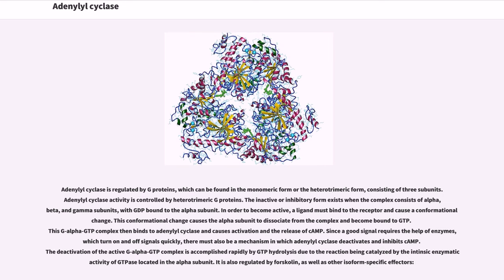Adenylyl cyclase is regulated by G-proteins, which can be found in the monomeric form or the heterotrimeric form, consisting of three subunits. Adenylyl cyclase activity is controlled by heterotrimeric G-proteins. The inactive or inhibitory form exists when the complex consists of alpha, beta, and gamma subunits, with GDP bound to the alpha subunit. In order to become active, a ligand must bind to the receptor and cause a conformational change. This conformational change causes the alpha subunit to dissociate from the complex and become bound to GTP. This G-alpha GTP complex then binds to adenylyl cyclase and causes activation and the release of cAMP.